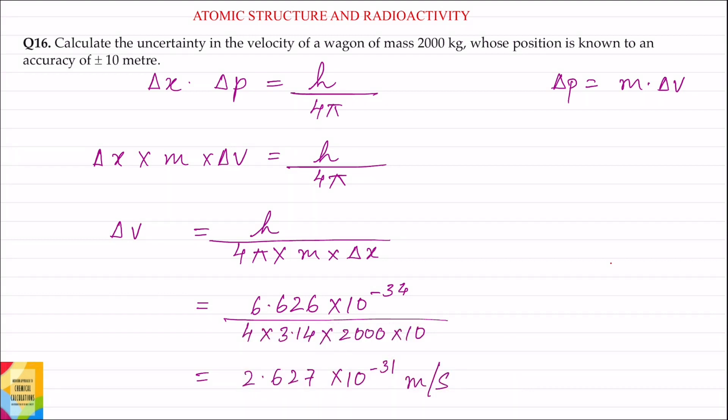Question 16. Calculate the uncertainty in the velocity of a wagon of mass 2000 kg whose position is known to an accuracy of plus minus 10 meter.